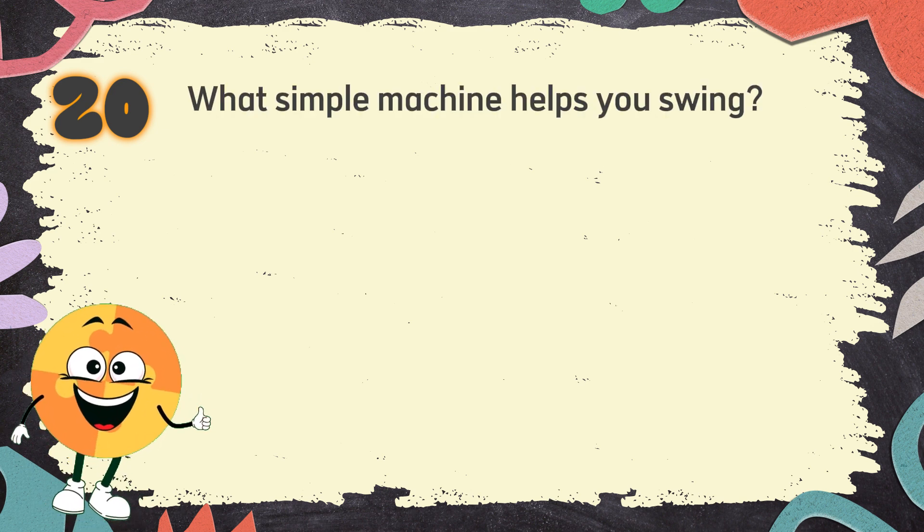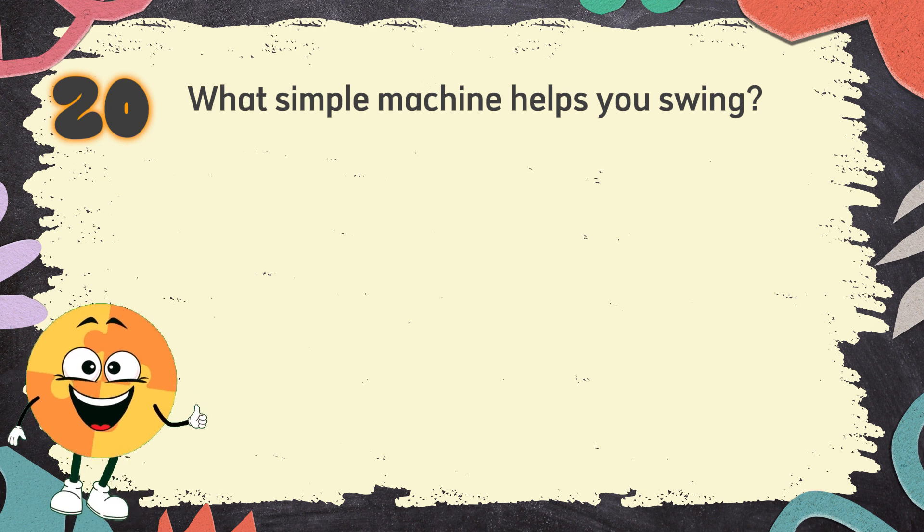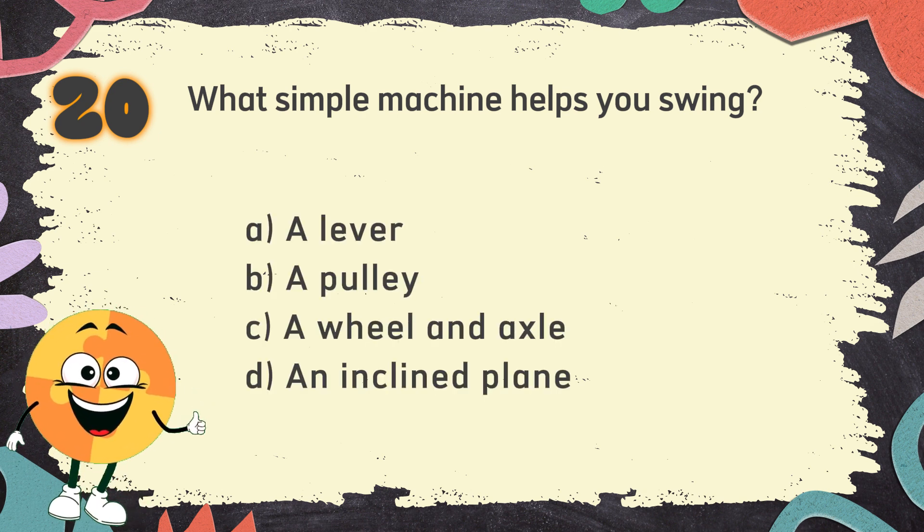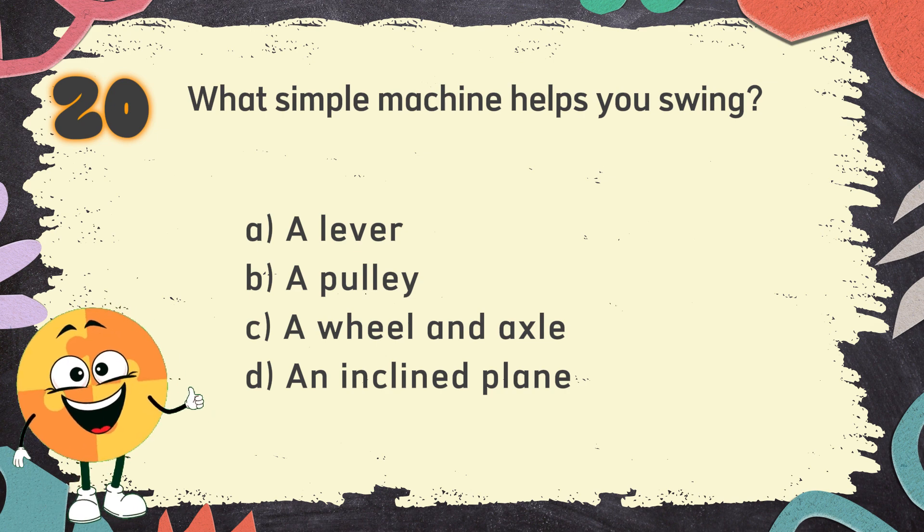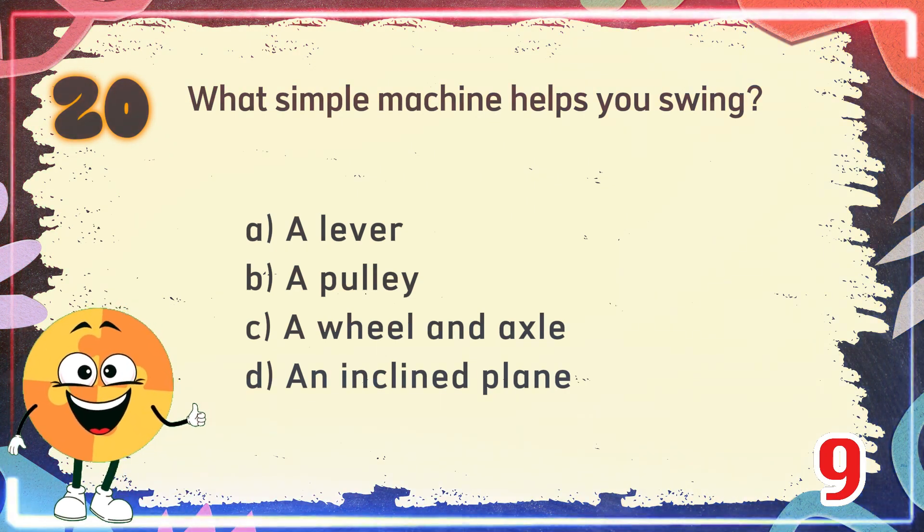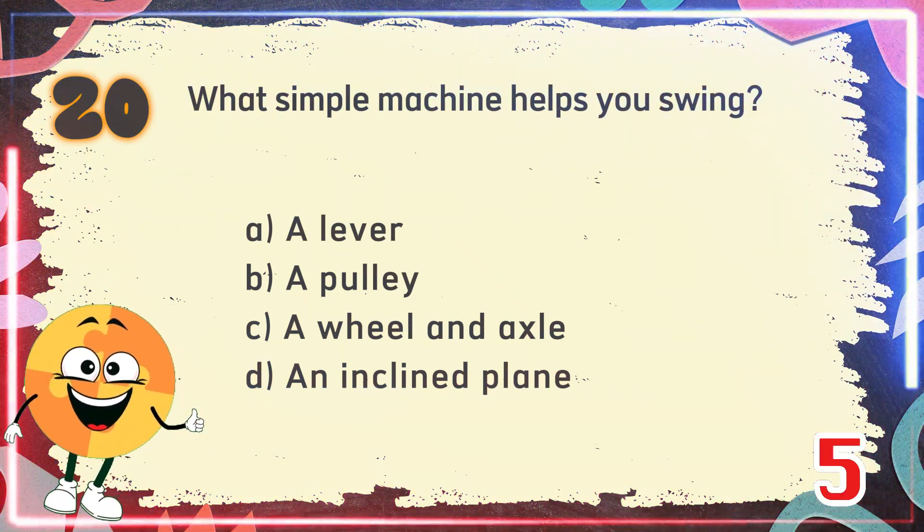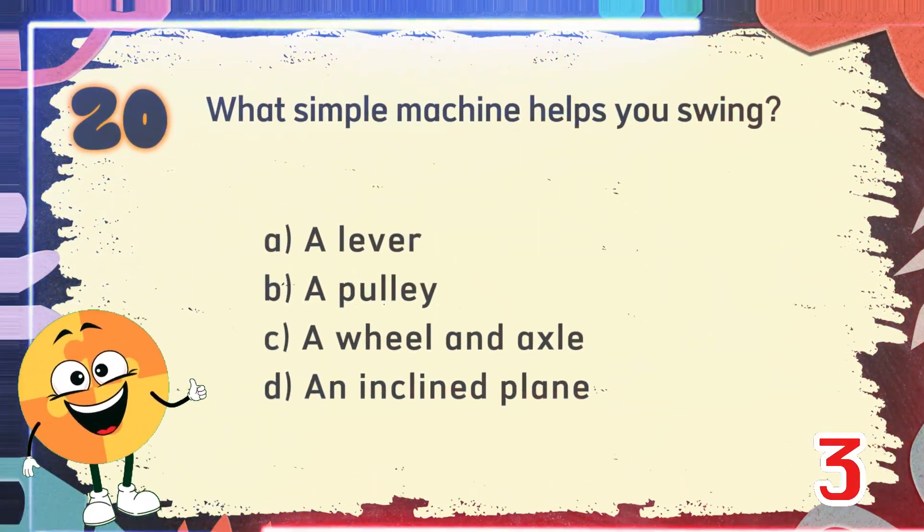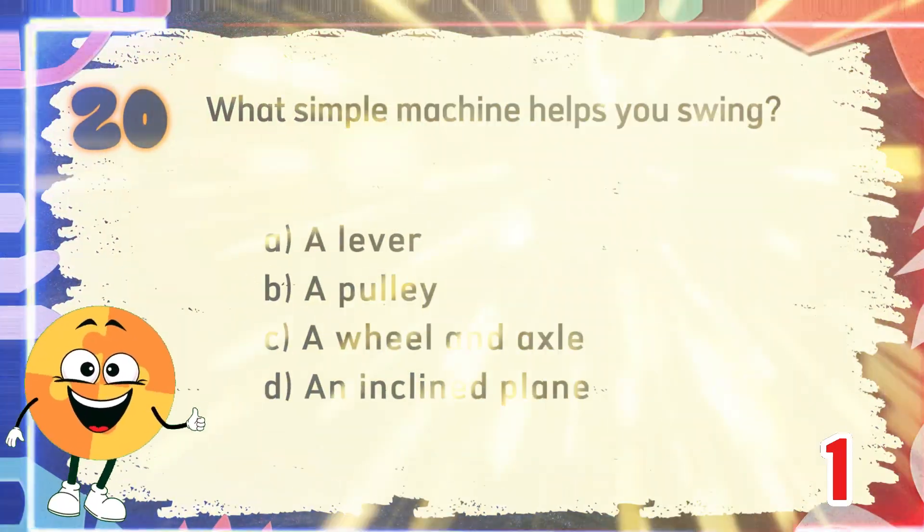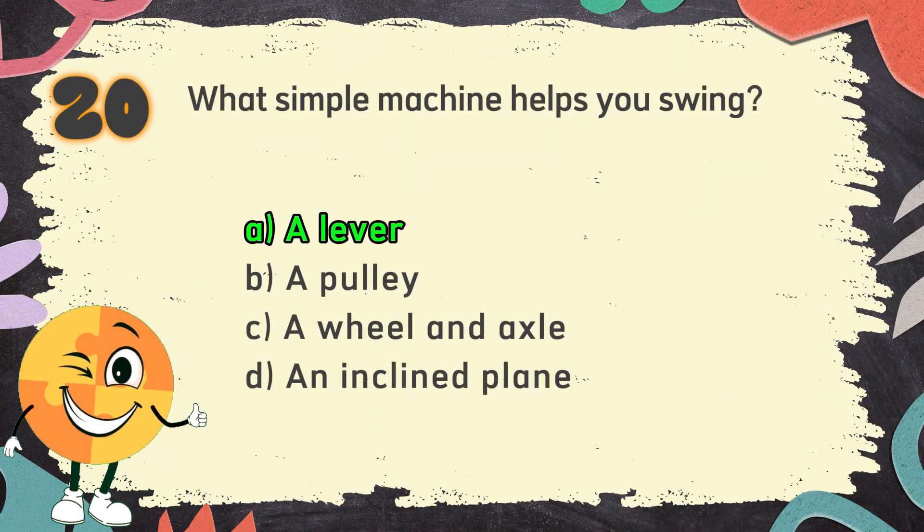Number 20. What simple machine helps you swing? The choices are A. A lever, B. A pulley, C. A wheel and axle, D. An inclined plane. The correct answer is A. A lever.